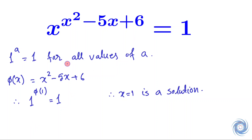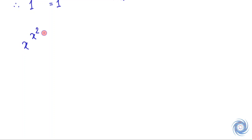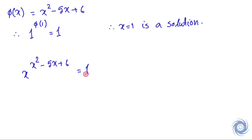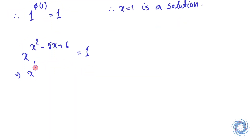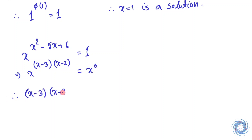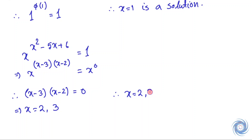Now let us rewrite the given equation. From here, we can factor the exponent, and the solutions are x equals 2 and x equals 3.